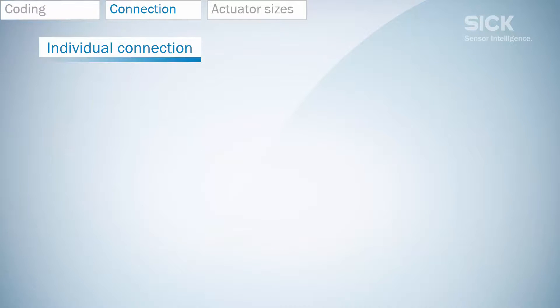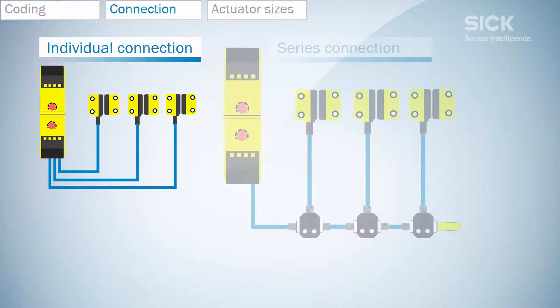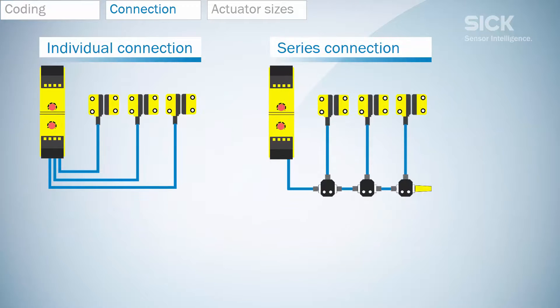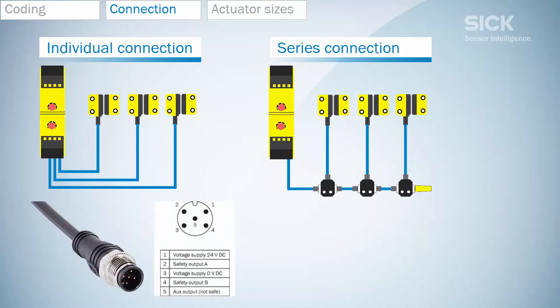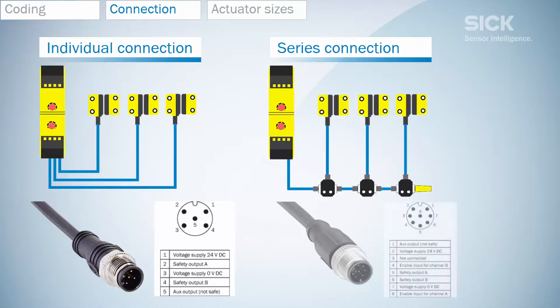Every sensor can be connected either individually or in series. Therefore, there are different connection options available: M12 5-pin connector, or 5-wired cable for individual connection, or M12 8-pin connector with two additional inputs for series connection with T-junctions.